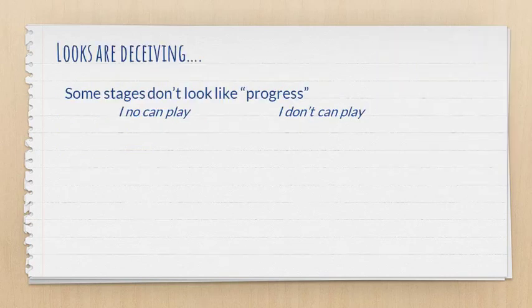Indeed, some stages don't look like progress because there isn't necessarily an increase in accuracy, and yet the learners are making progress. So if a learner is going from saying 'I no can play' to 'I don't can play,' you might think they're not making progress. However, they are — because in developmental sequences, this tells us that they're getting closer and closer to the target.